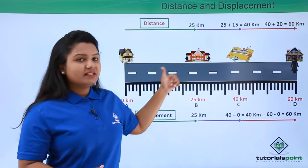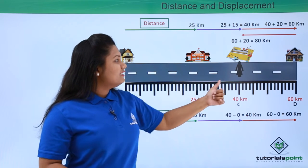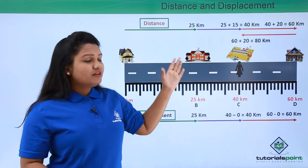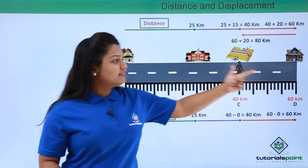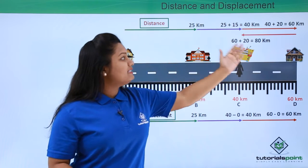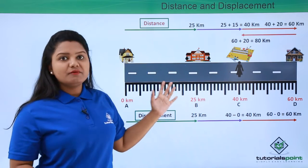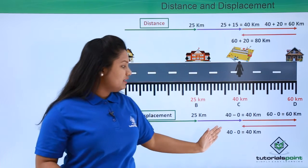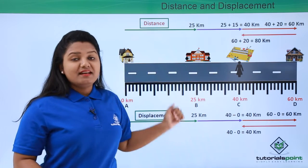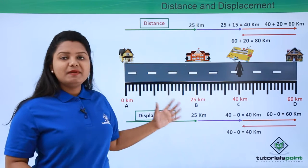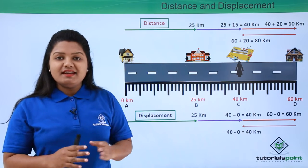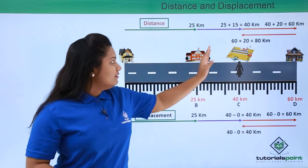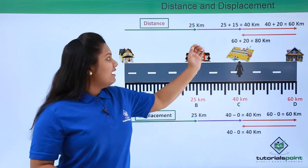Now suppose I want to return back to my home, so I take a U-turn. Suppose I reach the tennis court on the way back. The total distance covered becomes 60 plus 20, that is 80 kilometers. Here the displacement is different — it is final minus initial, which is 40 minus 0, that is 40 kilometers. As I said, for displacement we only consider the initial and final position of the body, which is irrespective of the path taken.